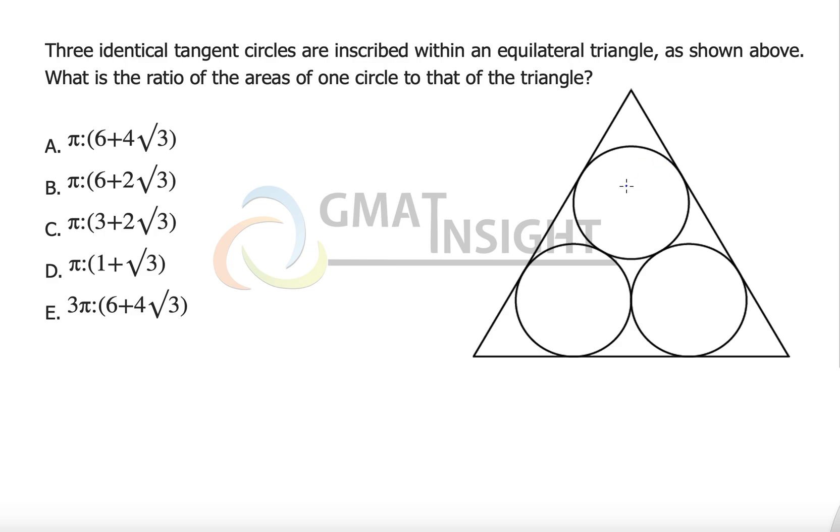Since we have to find out the ratio of area, I'm assuming that the length of the side of this equilateral triangle is 4 and using this I would like to find out the radius, and then I will quickly find out the ratio of areas.